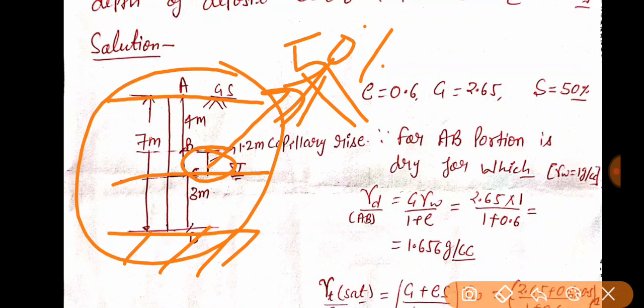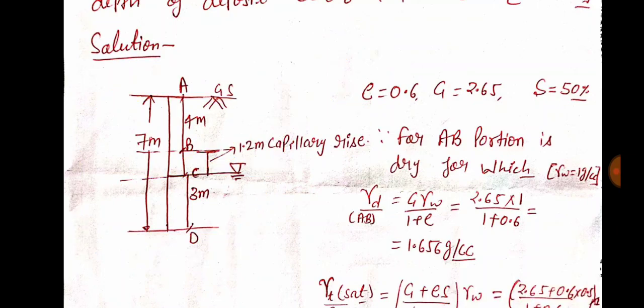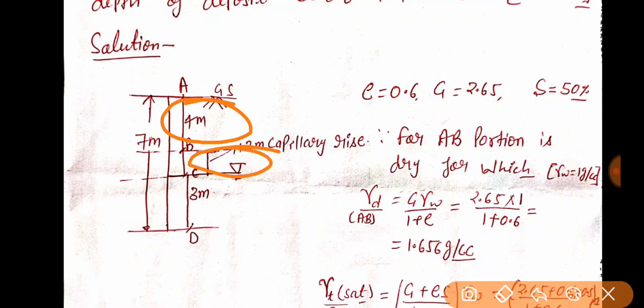In unit number 2, effective stress, total stress, and pore water pressure — you need to know the definition and meaning, and how we do the calculation for them. Let's start. You can see the upper portion — that is actually the dry portion. What will happen? Dry portion. This is partially saturated portion. That is gamma d.